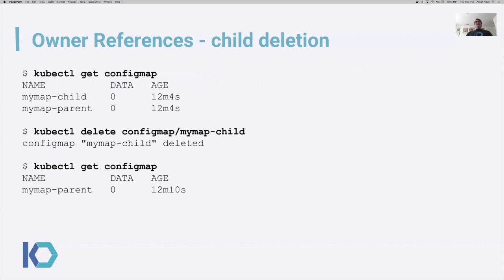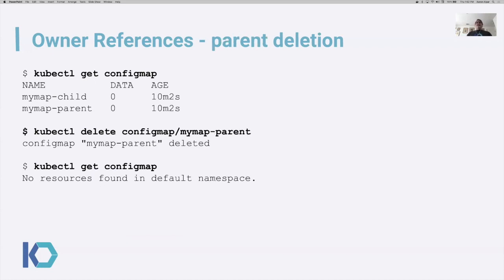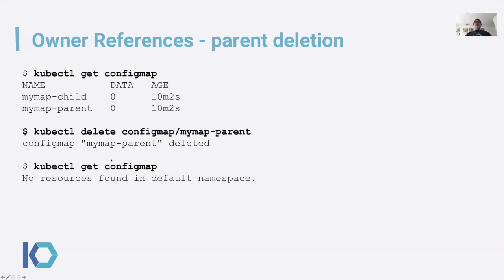Here is another example. After I created these objects, we can see them both. You can delete the child, and when an owner reference is involved, the deletion of a child typically doesn't really do anything — or rather, the child will be deleted, but nothing will be done with the parent. Things get more interesting when deleting the parent. Owner references really change how trees of objects are deleted. Here I create the parent and child config maps, then I go ahead to delete the parent config map, and because there's an owner reference from the child to the parent, when I go to get the config maps, I'll see that none are in the namespace.